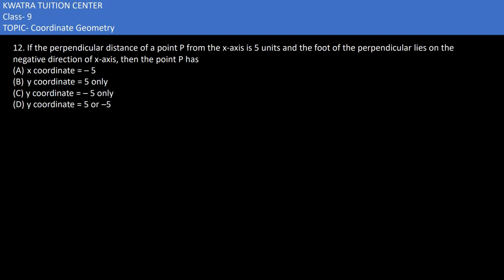In this part, the perpendicular distance of point P from the x-axis is 5 units, and the foot of the perpendicular lies on the negative direction of the x-axis. We can draw a diagram to understand this: the foot of the perpendicular is on the negative x-axis, and the distance from the x-axis is 5 units.